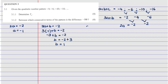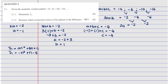To find c: a plus b plus c equals negative 4. Substituting a equals negative 1 and b equals 1: negative 1 plus 1 plus c equals negative 4. The negative 1 and positive 1 cancel out, so c equals negative 4. Therefore Tn equals an squared plus bn plus c, which gives us Tn equals negative n squared plus n minus 4. That's how you find your Tn.